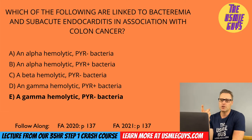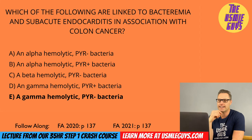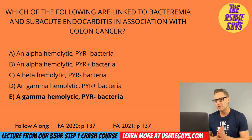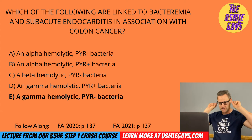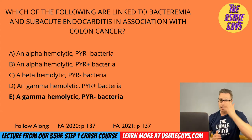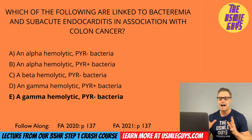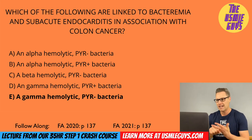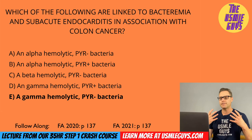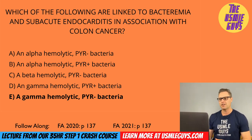The correct answer here is E. Strep bovis is a non-enterococcus, gram-positive, gamma-hemolytic, PYR negative bacteria that can grow in bile. It is cocci-shaped and catalase negative. Strep gallolyticus, which is Strep bovis biotype 1, can lead to bacteremia and subacute endocarditis, and it is high yield that it is associated with colon cancer. The infective endocarditis linked to this organism tends to cause large vegetations, and it is highly destructive, leading to perforation of the valve and cardiac septal or valvular ring abscess formation.